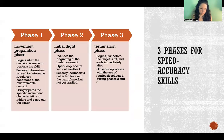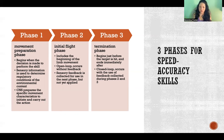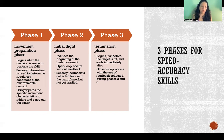There are three phases for speed-accuracy skills. Phase one is the movement preparation phase, which begins when the decision is made to perform the skill and ends when the actual movement begins. During this phase, sensory information is used to determine the regulatory conditions of the environmental context — using visual, tactile, auditory, and other sensory information to assess the situation. For instance, if you've decided to push a button or flip a light switch, you use visual and other sensory feedback to assess conditions: maybe it's high up, looks slippery, or there's an obstacle to dodge.